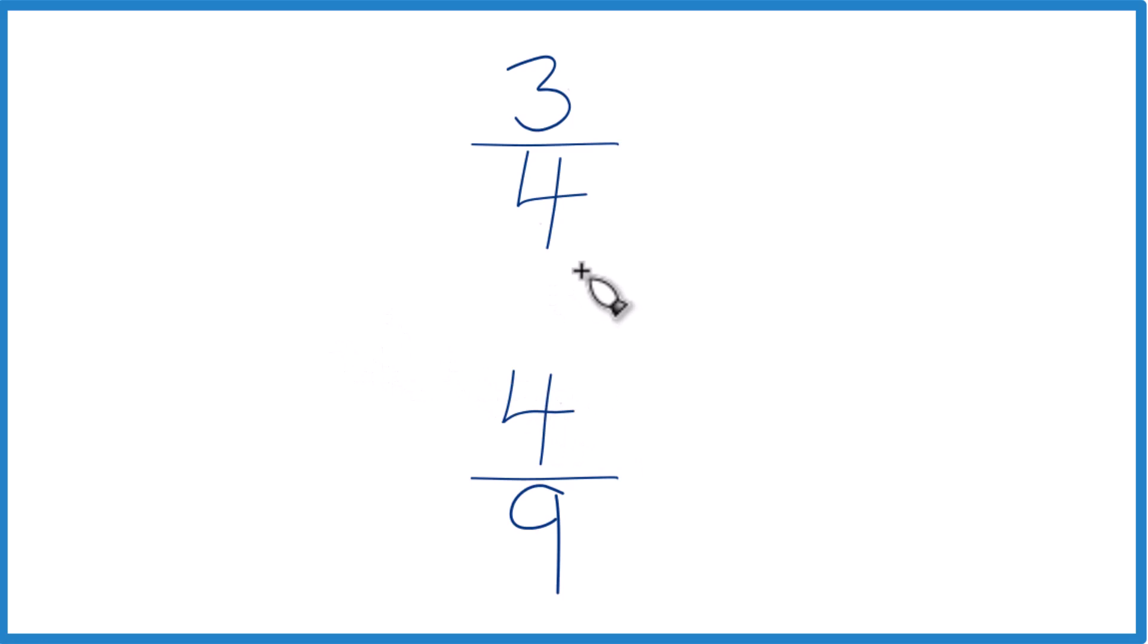You could also find a common denominator, something that both of these numbers here go into evenly. Because if the denominator is the same,